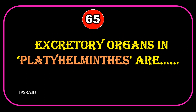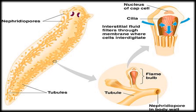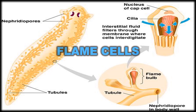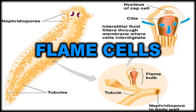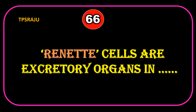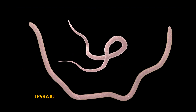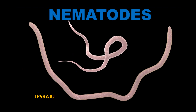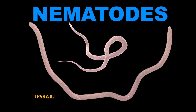Excretory organs in Platyhelminthes are Flame cells. Renette cells are the excretory organs in Nematodes.